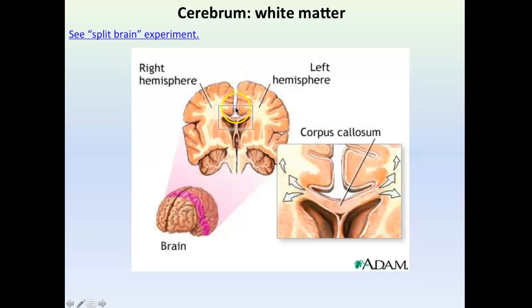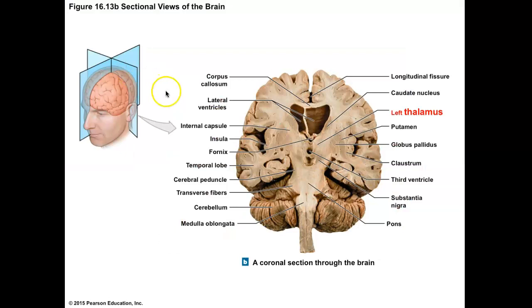In a frontal section of the brain, we can see the corpus callosum as a white band crossing the two hemispheres, with the deep longitudinal fissure above it. Beneath the corpus callosum are the lateral ventricles. We can clearly see how the inner portion of the brain is white matter and the upper edges are gray — the difference between unmyelinated gray matter and myelinated white matter, with internal areas having both gray and white regions.